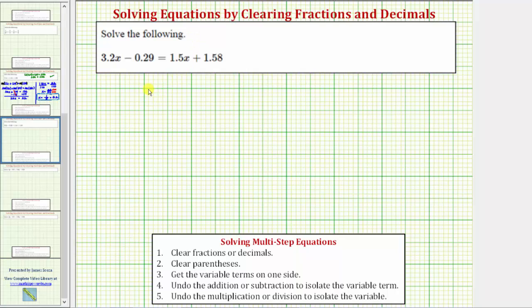We want to solve the equation 3.2x minus 0.29 equals 1.5x plus 1.58.